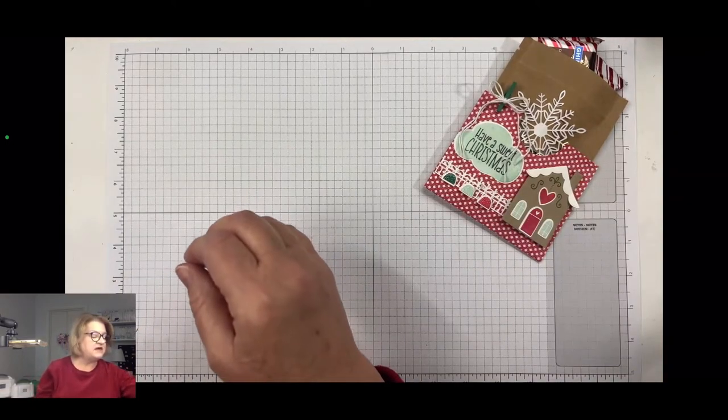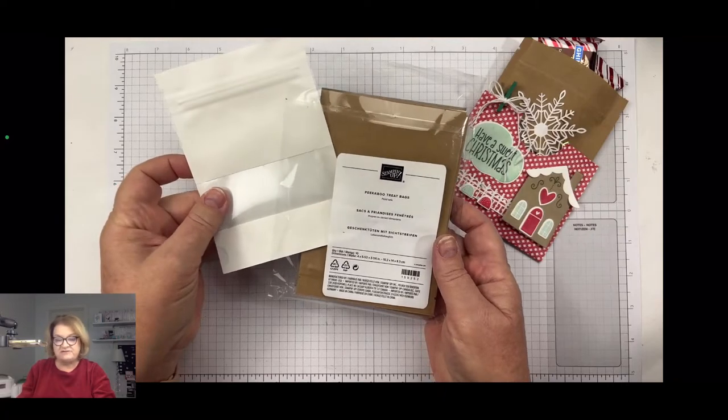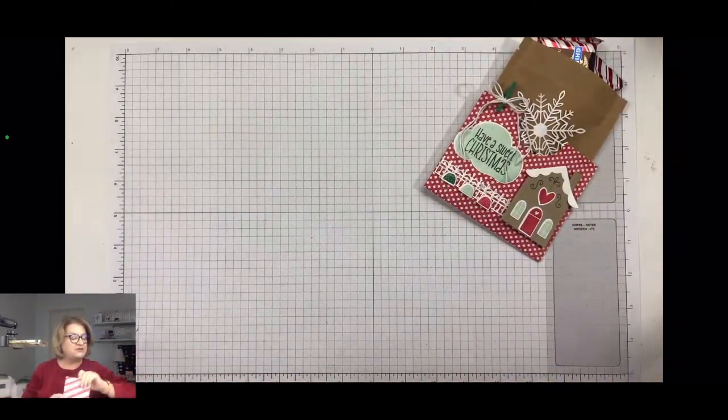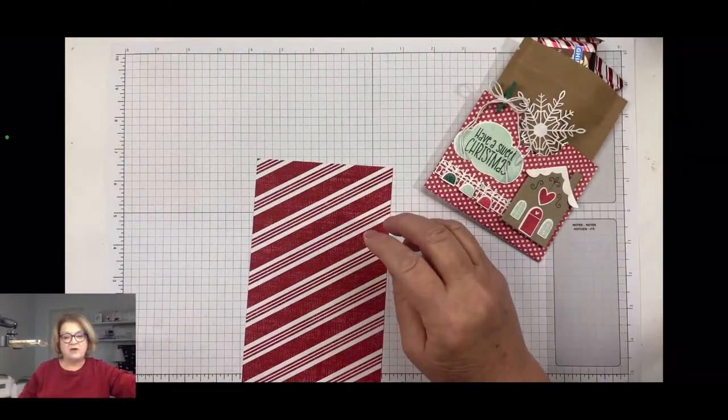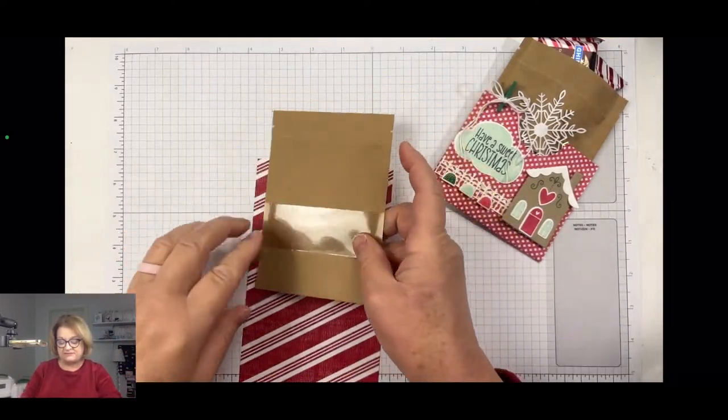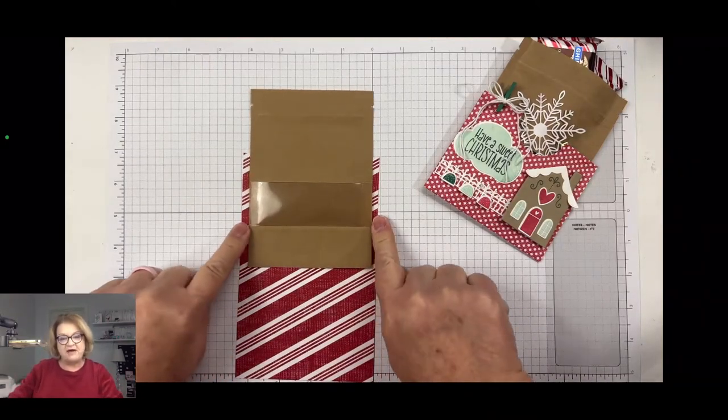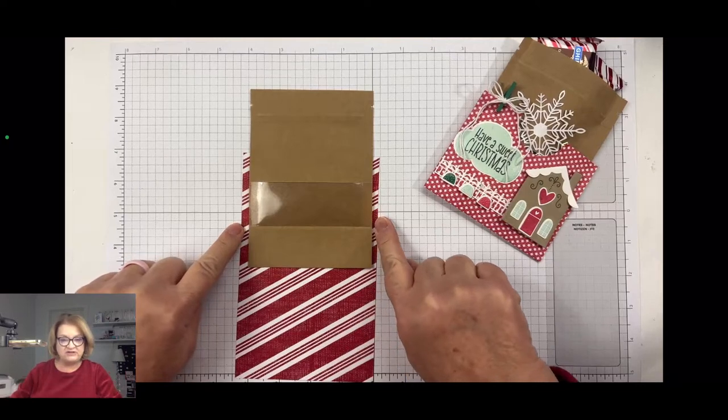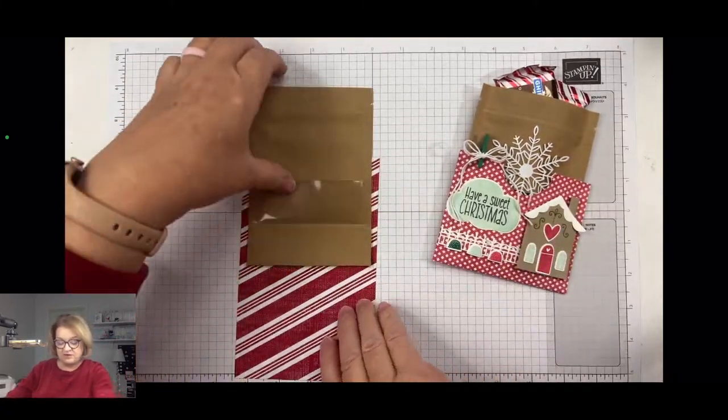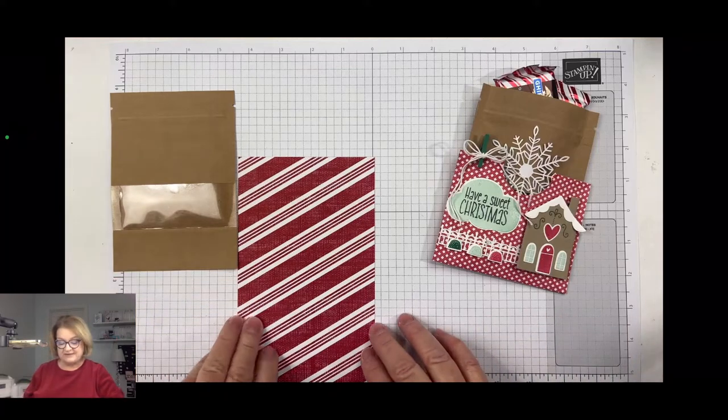So I'm using the peekaboo treat bags as I mentioned before. They come in a package of 10. You get 5 white and 5 craft. And how I measured this for our project was I took my bag and I just measured the width of it. So if you're using a different bag just measure the width and add about a fourth of an inch on each side. And this is where we'll put our adhesive and I've just folded it in half to make the pocket. So this one measures, if you're using the peekaboo bags, it measures four and three eighths by seven.